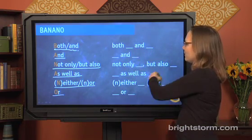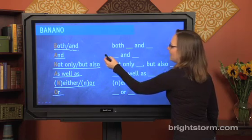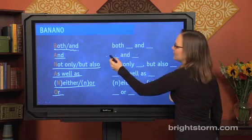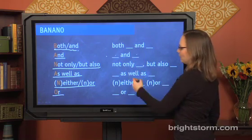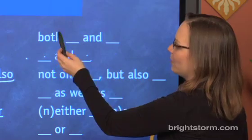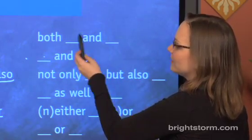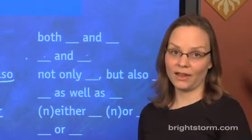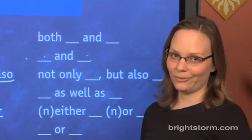Just to give you an idea what that would look like: just like before with healthy, wealthy, and wise — the three pieces needed to have parallelism — the same would hold true for anything here. For instance, I could say, I want both coffee and tea. And coffee and tea would have to be parallel. In that case they are, because they're both nouns.